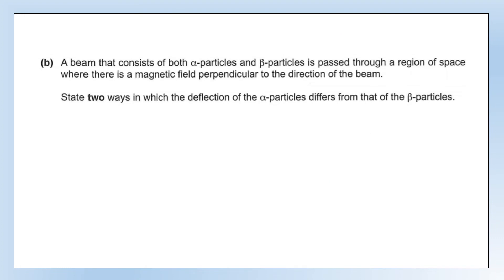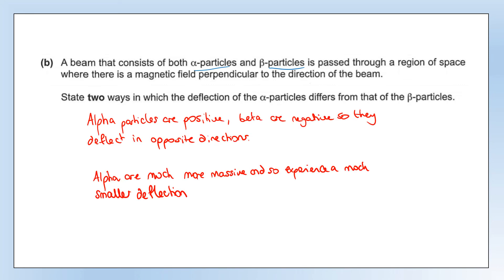Final part: a beam containing both alpha particles and beta particles passes through a region of magnetic field perpendicular to the beam. State two ways in which the deflection of alpha particles differs from that of beta. First: alpha particles are positive and beta particles are negative, so they are deflected in opposite directions by the magnetic field. Second: alpha is much more massive, so it experiences a much smaller deflection — even though alpha experiences double the force of beta, it has roughly 10,000 times the mass, giving a much smaller deflection.